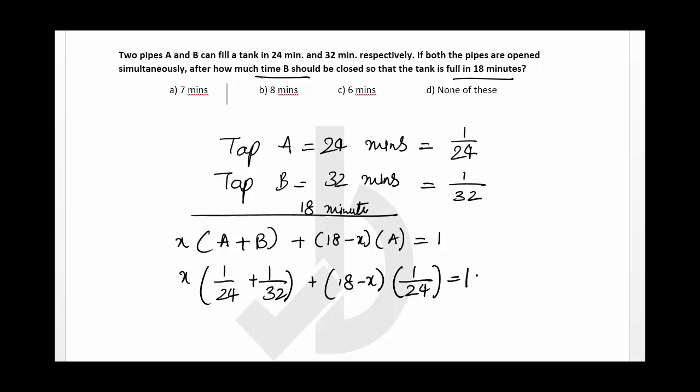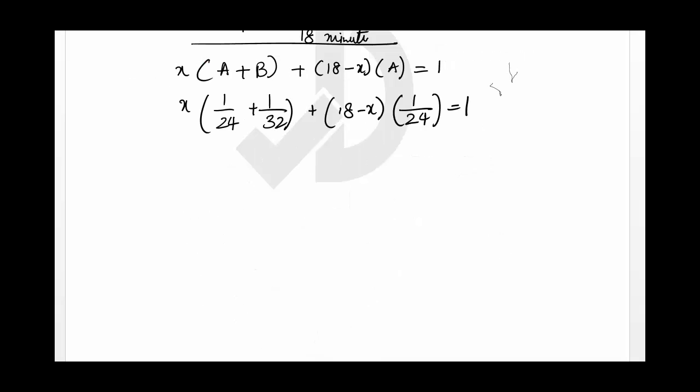Now let's try to use a direct LCM of all this. Let's take a complete LCM. The LCM is 96. This is going 4 times and this is going 3 times. Plus (18 minus x) and this is going 4 times equals 1.